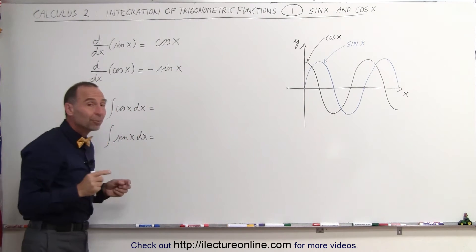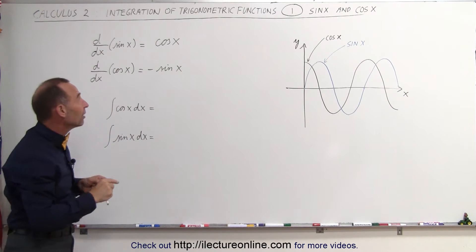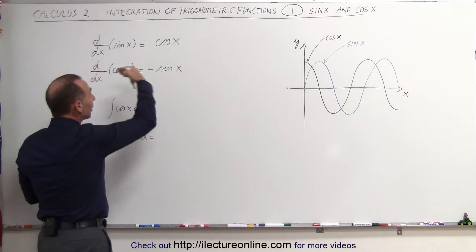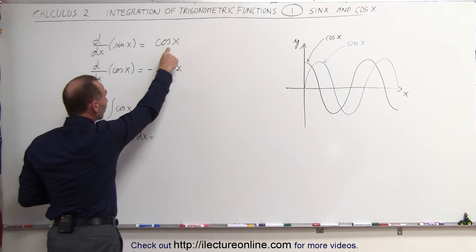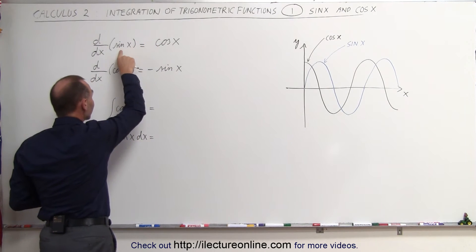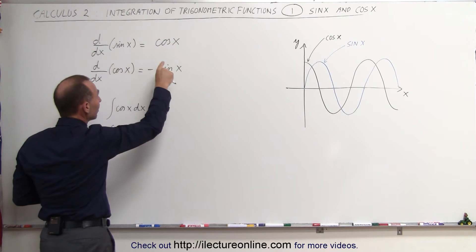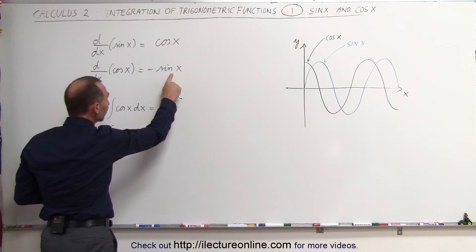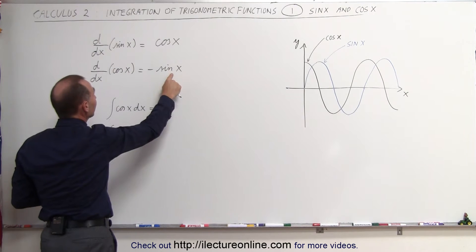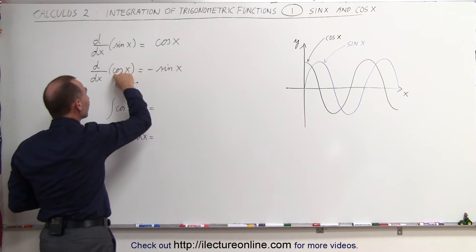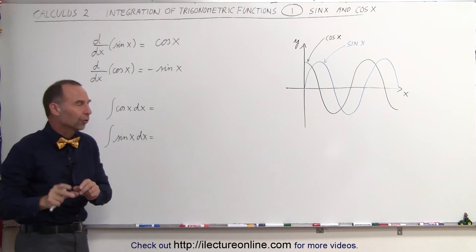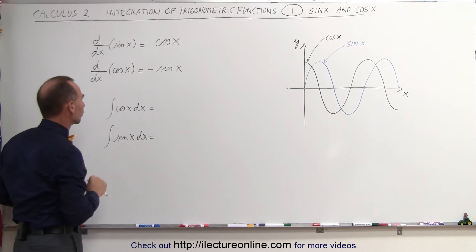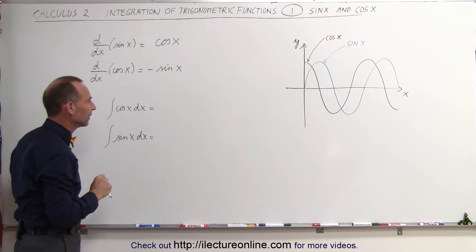That means if we then do the integration, we can go backwards, which means if we integrate the cosine of x, we should get back the sine of x. And if we integrate the sine of x, we should get back the negative of the cosine of x — not the inverse, but the negative of the cosine of x.